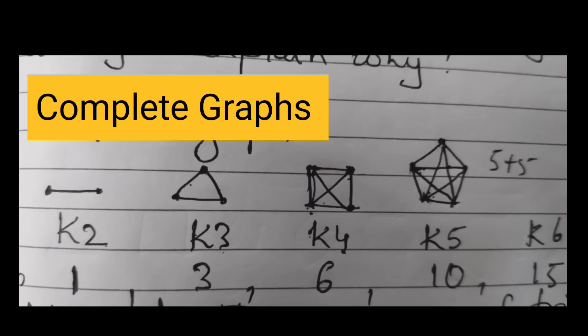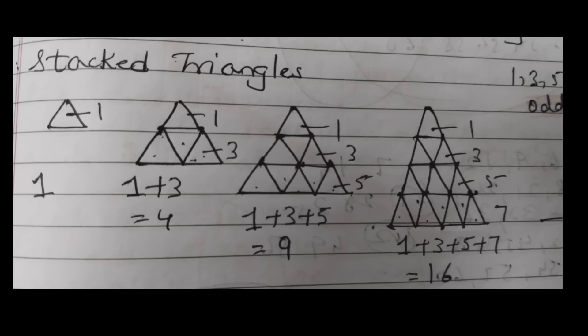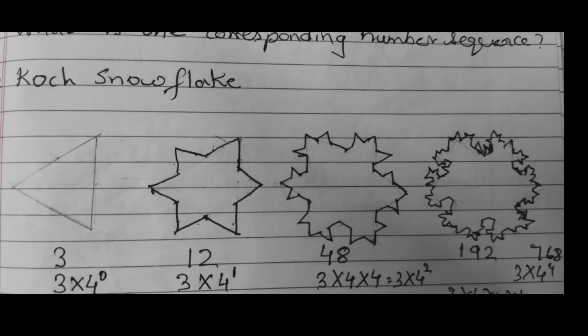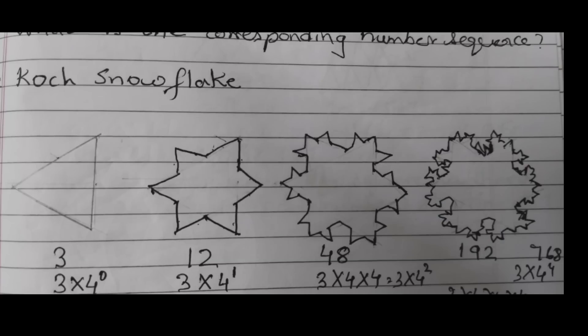Then you have complete graphs. Next one stacked squares. Next stacked triangles. And the last one is Koch snowflake. So I would suggest that you draw these shapes in your notebook. So that you get a good practice of how to draw these shape sequences. Because there is a question in figure it out where you need to redraw each of these sequences and then again you need to draw the next shape in the sequence.